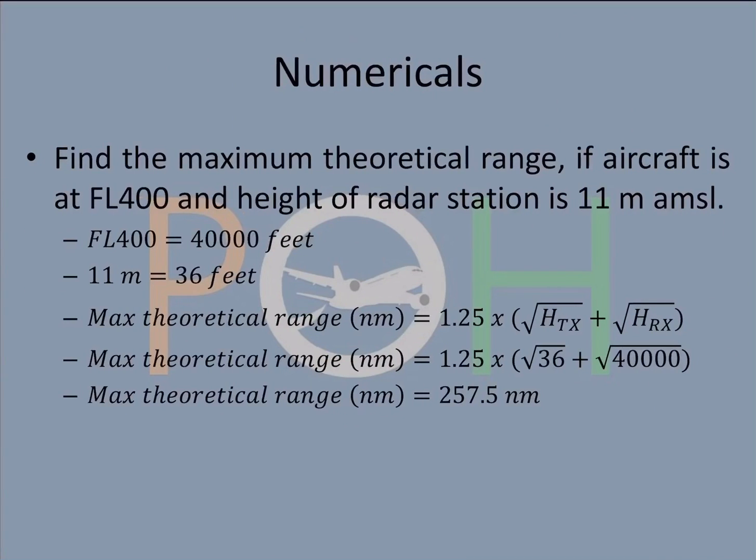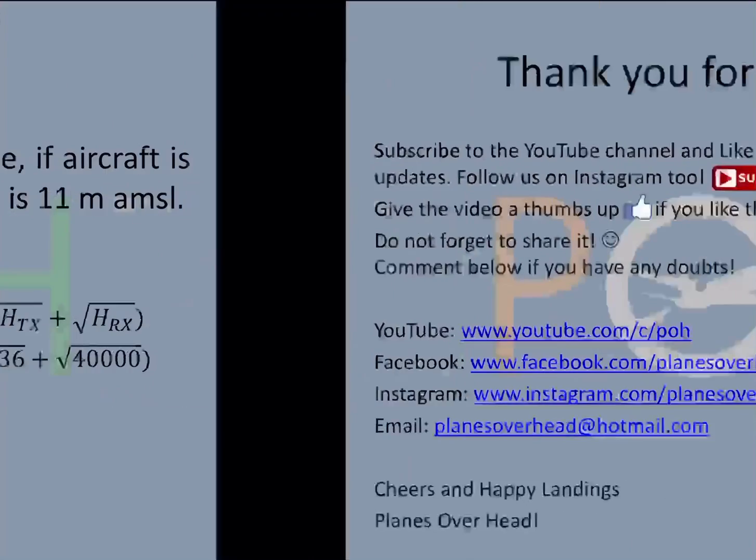Another numerical: find out the maximum theoretical range. Let's say the aircraft is at flight level 400, height of the radar station is 11 meters above mean sea level. What will be the theoretical range? A little bit of conversions because we have to put it in feet. Flight level 400 is 40,000 feet and 11 meters is 36 feet. When you put it into the formula here, 36 is of course that and 40,000, so you will get 257.5 nautical miles. That's the maximum theoretical range. Generally the practical range is obviously lesser than what is theoretical because it gets affected by atmospheric conditions, object type, and a lot of other things.